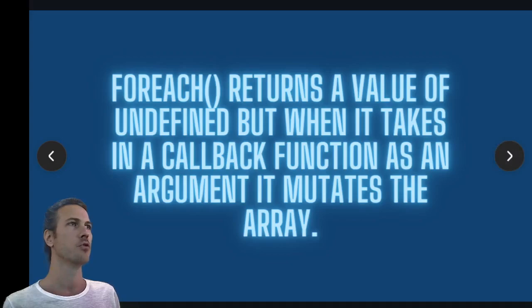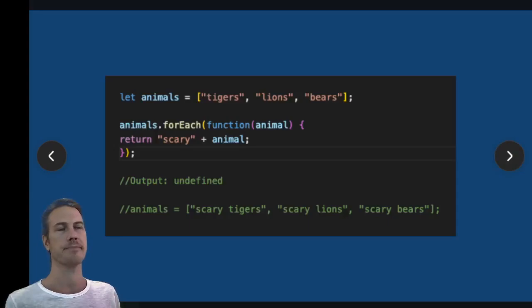forEach returns a value of undefined but mutates the array. So what does this look like? Here we have an array of animals and we run forEach on it with a callback function that's going to add 'scary' to each of the elements. So the output does return undefined, but we mutate the original array so that each of the elements now has 'scary' prior to what it had before.